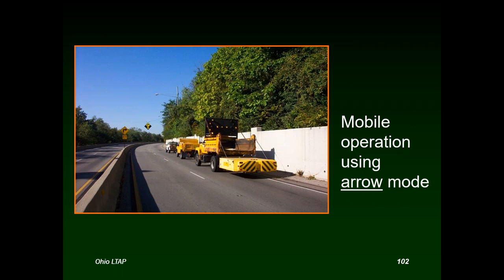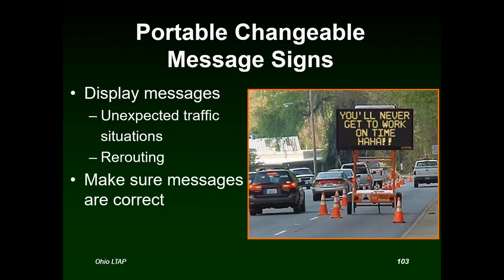The arrow mode is correct when people can clearly go around a mobile operation on a multi-lane roadway. Another device for heavy urban traffic is a portable changeable message sign, which can be used for unexpected traffic situations, rerouting, or reiterating advanced warning signs. We have to make sure the message displayed is correct.